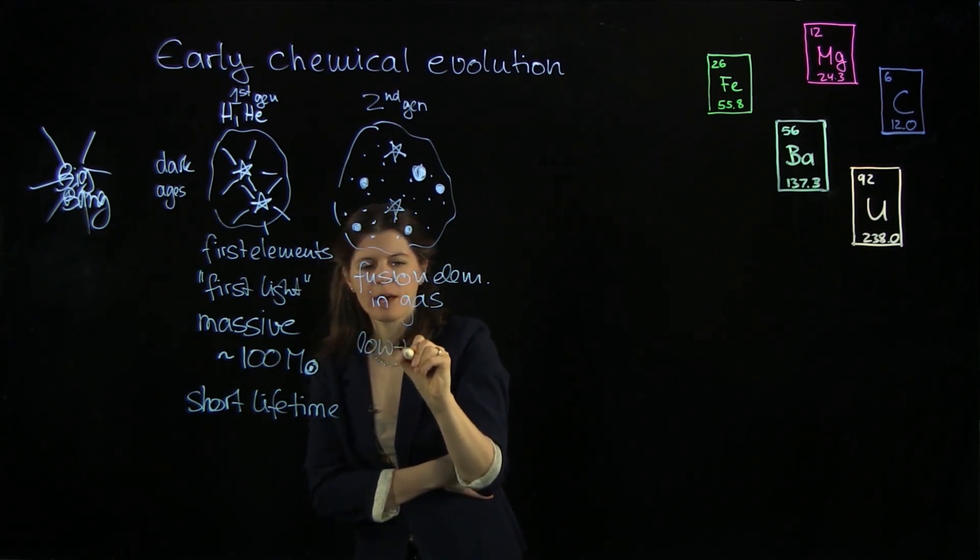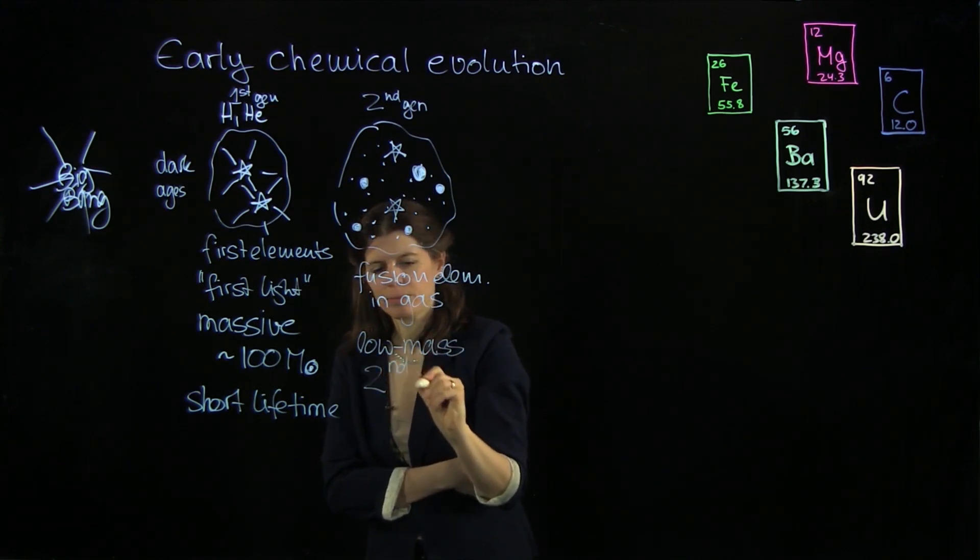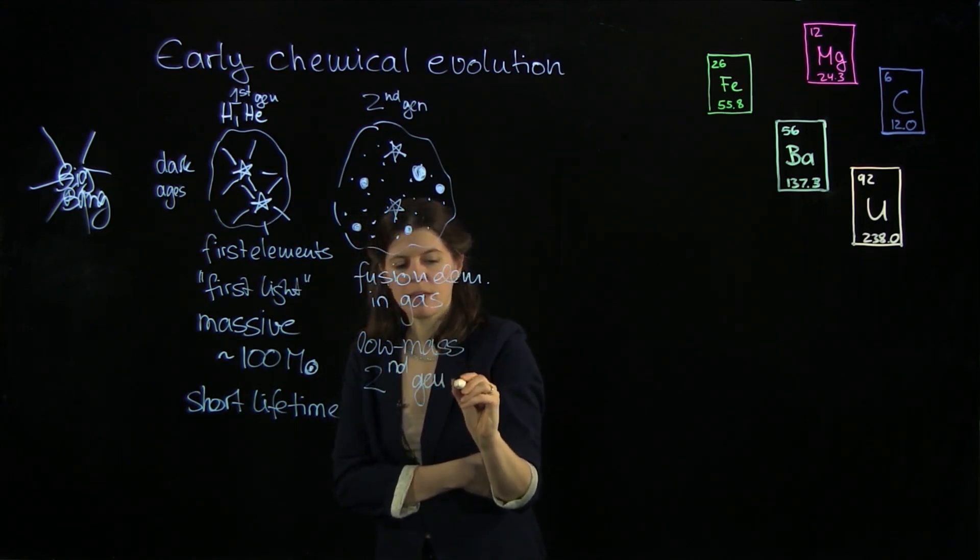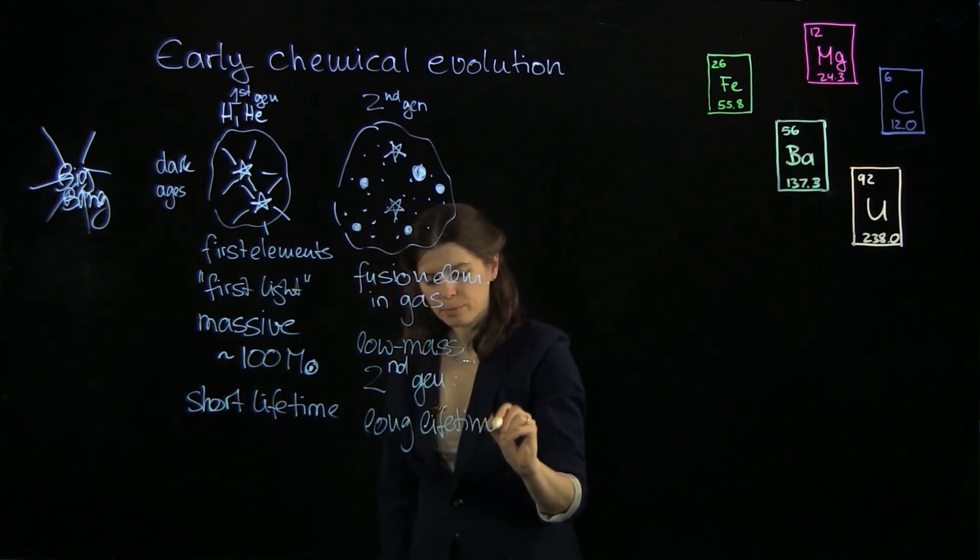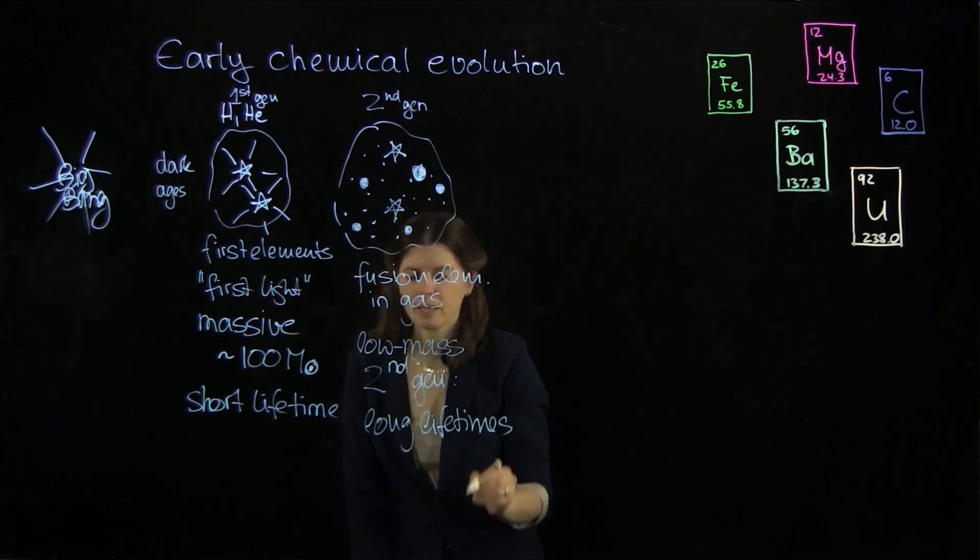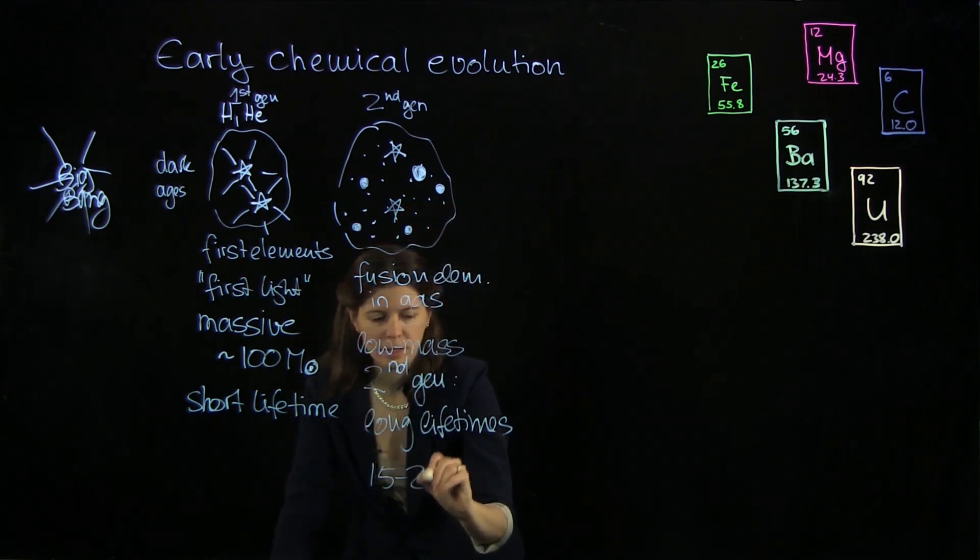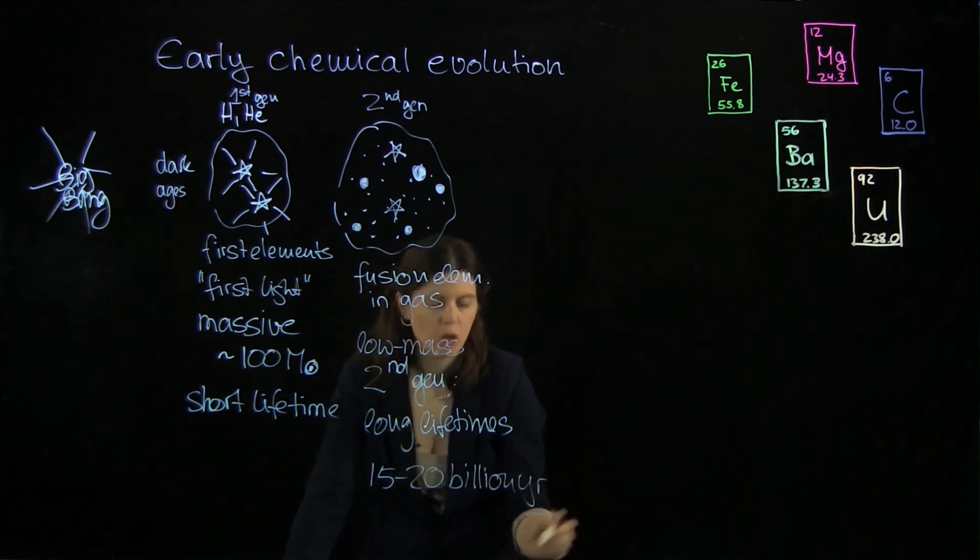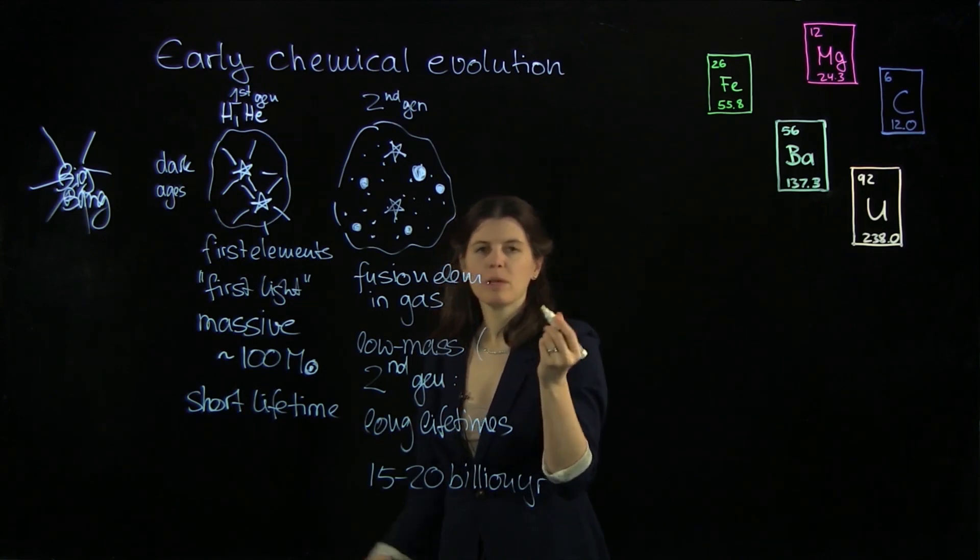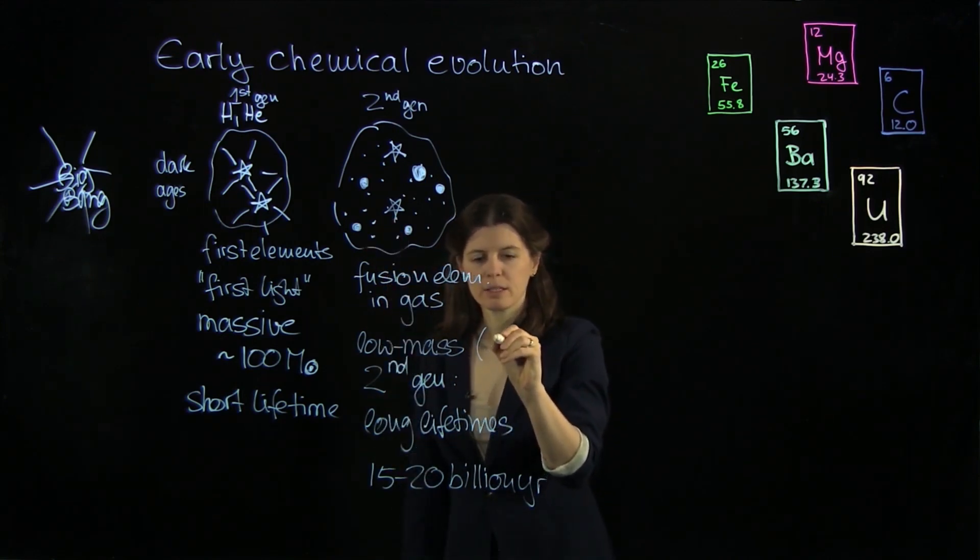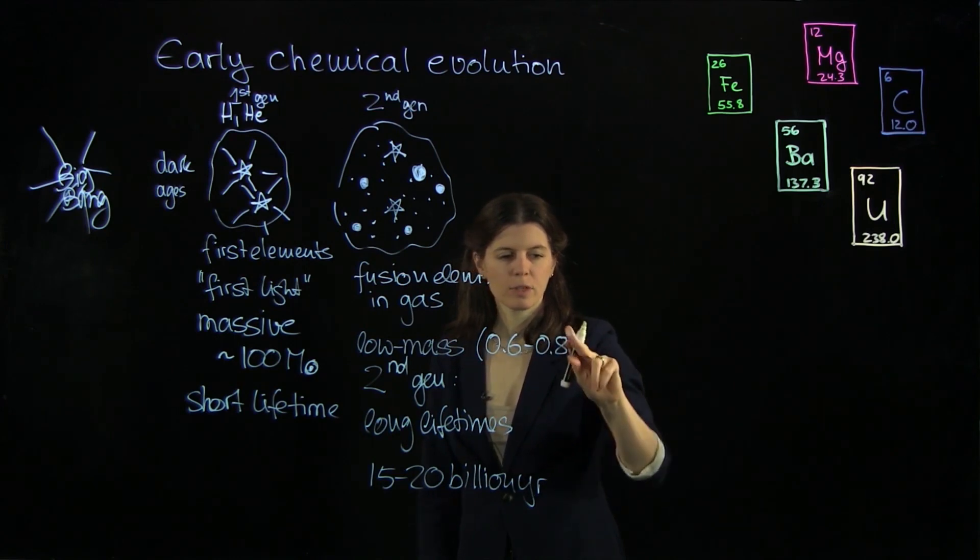So the low mass second generation stars, they have very long lifetimes. Long lifetimes. So the low mass, they had maybe masses or at least some of them had masses between 0.6 to 0.8 solar masses.